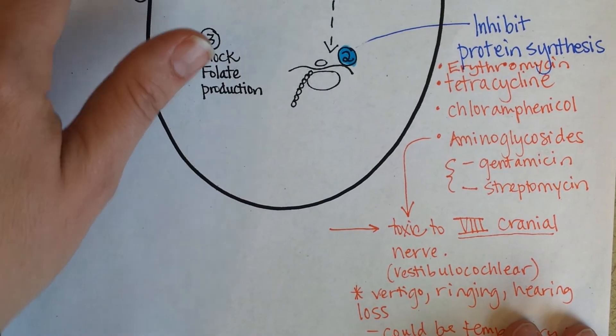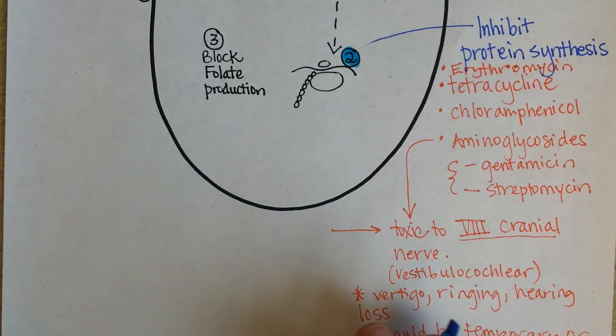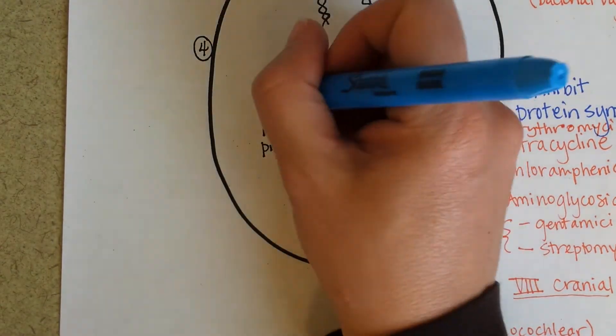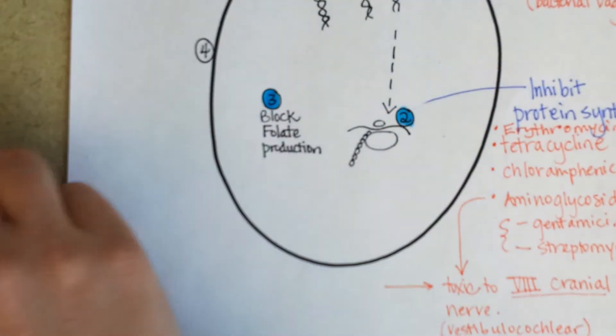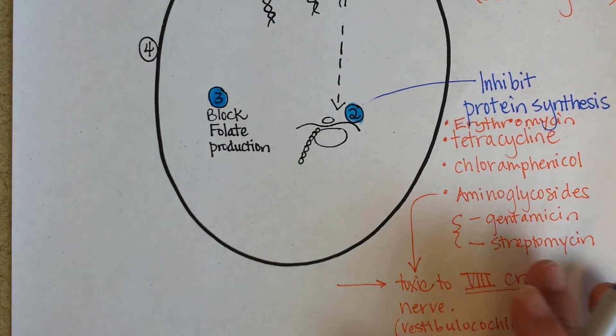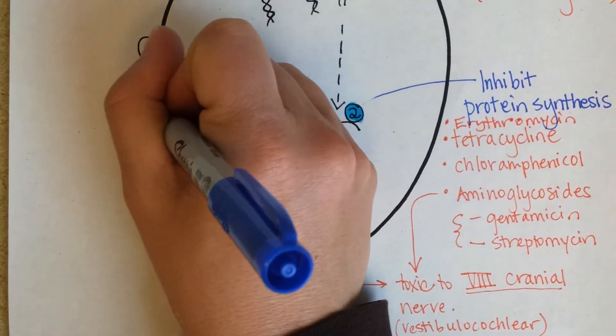And speaking of amoxicillin, that would be an antibiotic we'll talk about that affects the cell wall formation. Okay, so now let's look at a third method the antibiotics go after in affecting bacteria's ability to carry out their normal functions and therefore their ability to get bigger and divide and all that good stuff: blocking folate production.